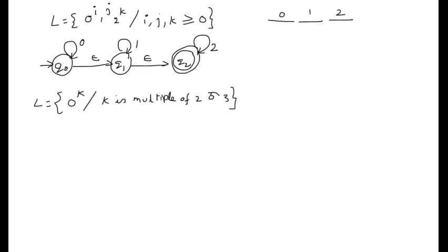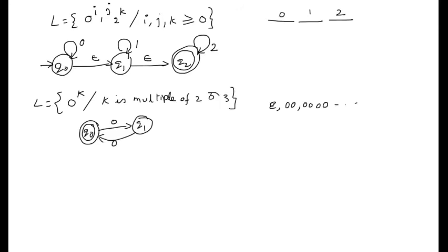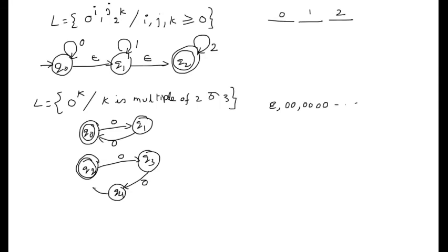For k as a multiple of 2, the accepted strings have lengths 0, 2, 4, and so on. The 0-length string is accepted, so q0 is a final state. q0 on 0 moves to q1, a non-final state, since length 1 is not accepted. q1 on 0 moves back to q0, since length 2 is accepted. For k as a multiple of 3: q2 is the starting and final state (length 0 accepted). q2 on 0 goes to q3 (non-final), q3 on 0 goes to q4 (non-final), and q4 on 0 returns to q2 (final), since length 3 is accepted.